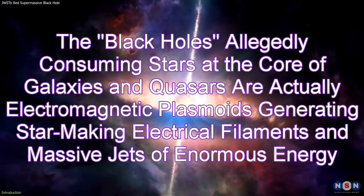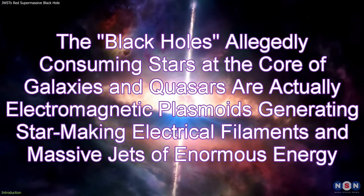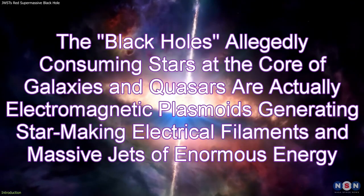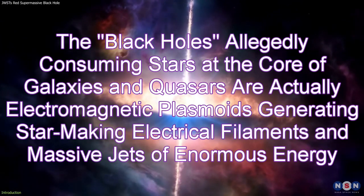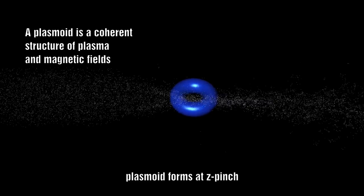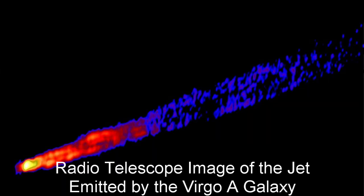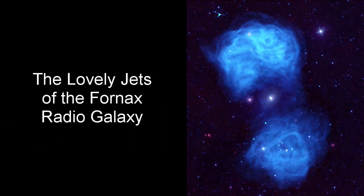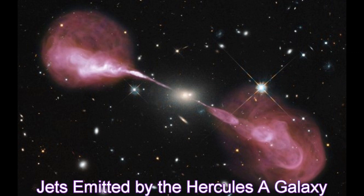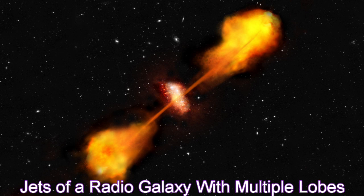The black holes allegedly consuming stars at the core of galaxies and quasars are actually electromagnetic plasmoids generating star-making electrical filaments and massive jets of enormous energy. A plasmoid is a coherent structure of plasma and magnetic fields. Radio telescope images show the jet emitted by the Virgo A galaxy, the jets of the Fornax radio galaxy, jets emitted by the Hercules A galaxy, and jets of a radio galaxy with multiple lobes.